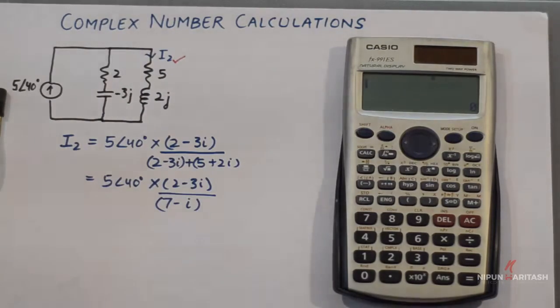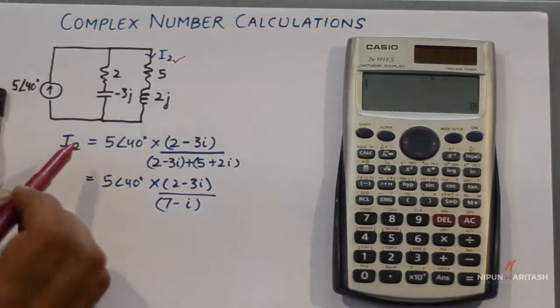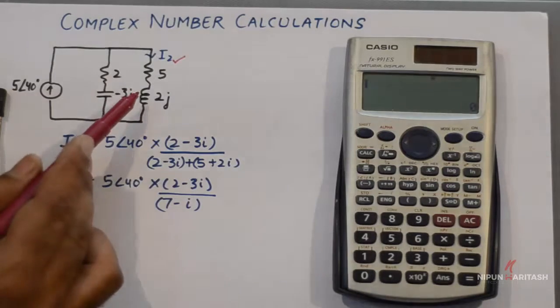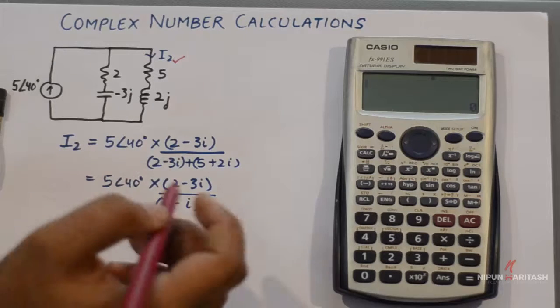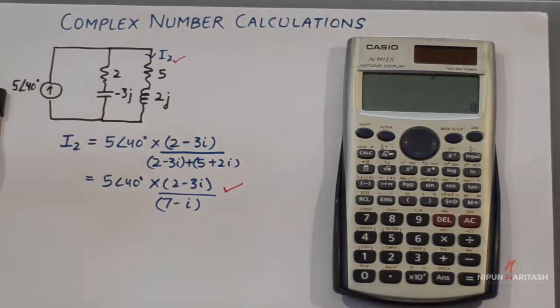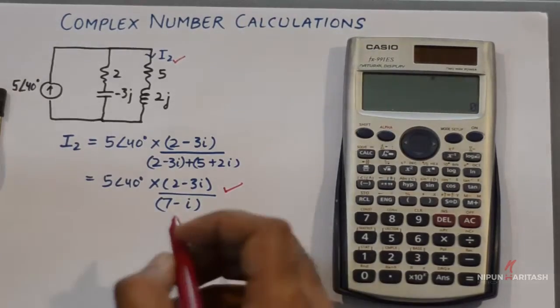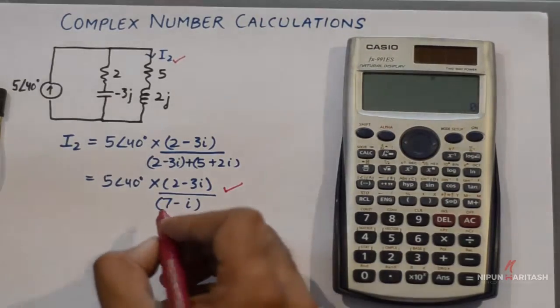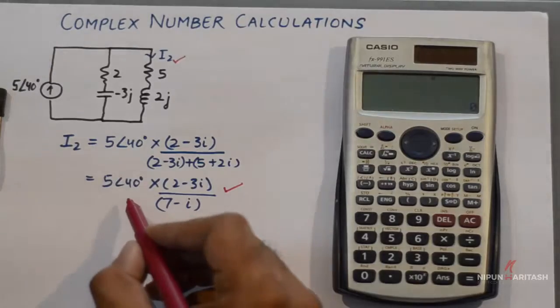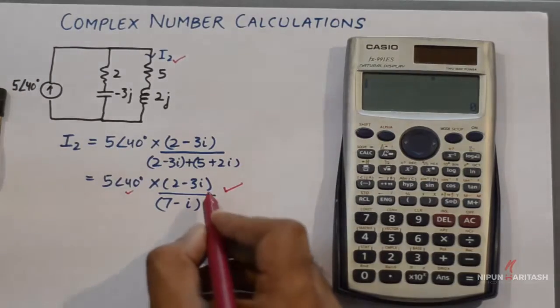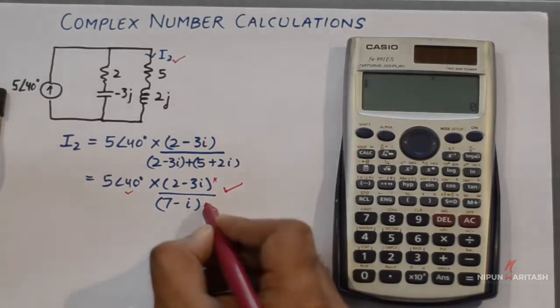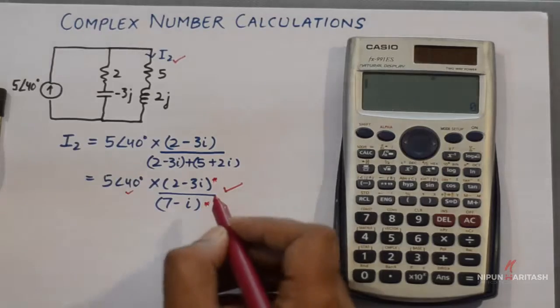By current division law, the current in the second branch comes out to be equivalent to this expression. Now if you look at this problem statement, we have a number represented in polar form and two numbers represented in rectangular form.